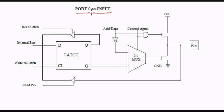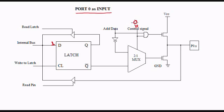When port 0 is used for input operations, a 1 has to be written onto the latch of port 0. One important point here is that the control signal has to be 0 when port 0 is used for input-output operations, and it has to be 1 when it is used for external memory. So in this case, it has to be 0.